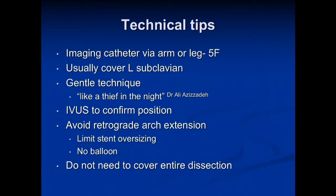Some technical tips for doing this: we put the imaging catheter either up the leg or via the arm. We typically recommend a five French pigtail to get a good contrast load so you can visualize the anatomy. We typically cover the left subclavian, but practice a very gentle technique. As Dr. Ali Azizzadeh from Houston describes it, you have to go in like a thief in the night — sneak in and sneak out without anybody knowing you're there, because that aorta is very friable and very prone to injury.